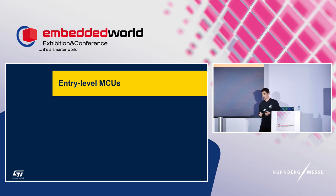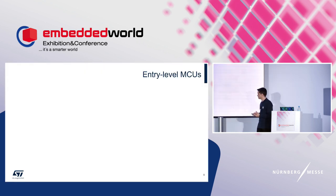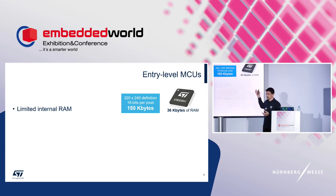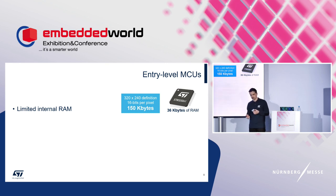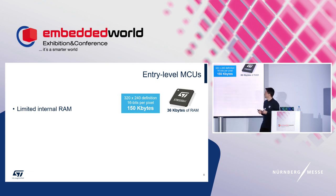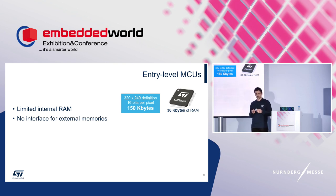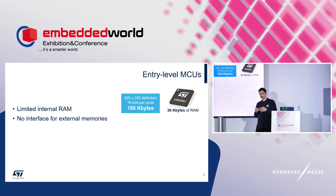What are the constraints of entry-level MCUs? First, limited RAM. On the STM32G0, one of STMicroelectronics' entry-level MCUs, we have only 36 kilobytes of RAM, and you still want to do something beyond just displaying the user interface. So storing a full frame buffer in internal RAM is not possible. And on top of that, there is no way to extend this RAM — on the G0 you cannot connect external SDRAM, only external flash.